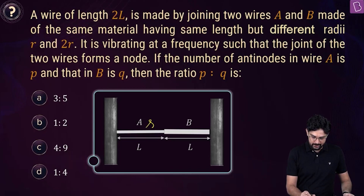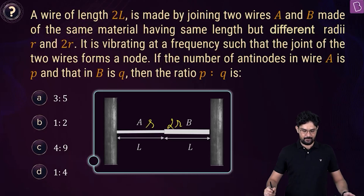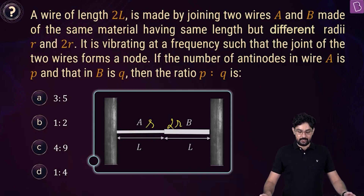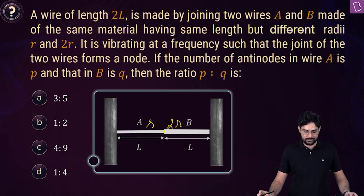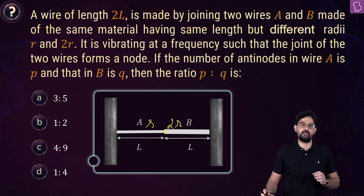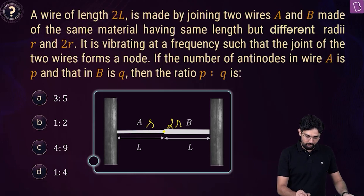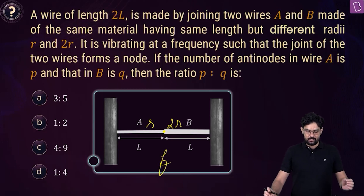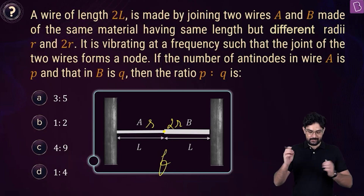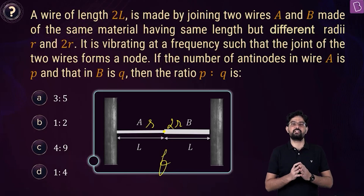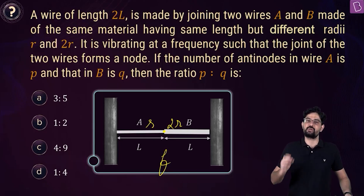So wire A is thinner. It has been given that it is vibrating at a frequency such that the joint of the two wires forms a node. So this intersection point is a node. Let's assume the frequency of vibration is F. Now, if the number of antinodes in wire A is P and that in wire B is Q, then we have to find out the ratio P to Q.